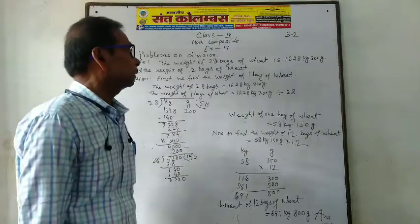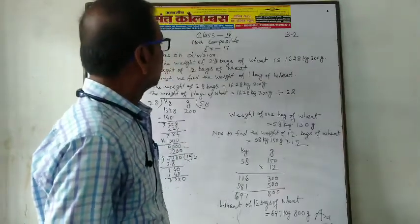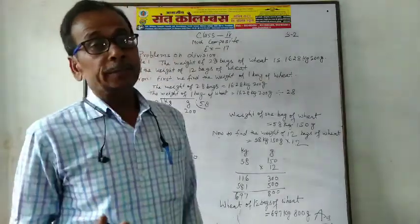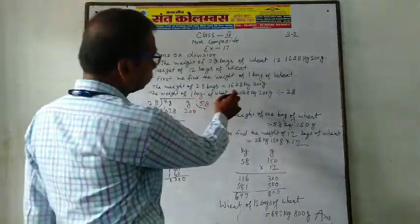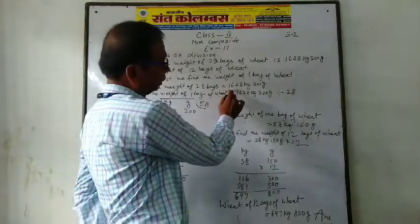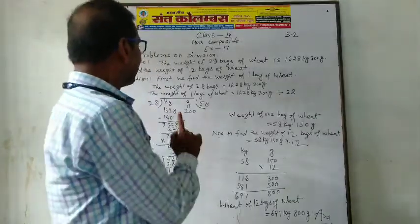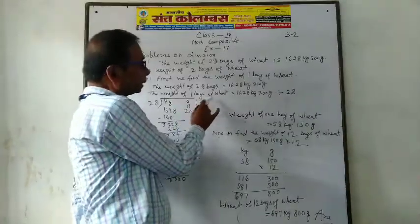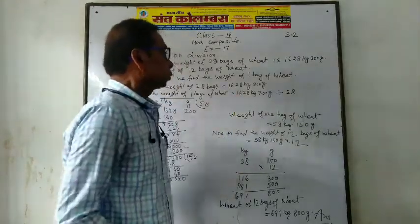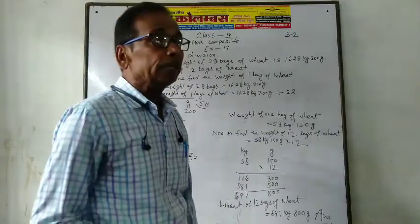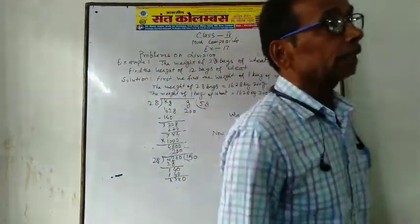First we find the weight of 1 bag. The weight of 28 bags is equal to 162,880 grams. The weight of 1 bag is equal to 162,880 grams divided by 28.